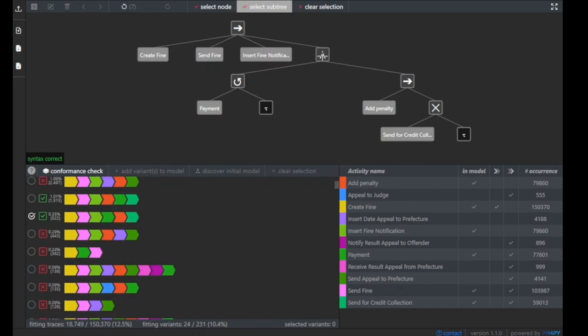Now again, the user could manually edit the process model, could press conformance check to see what is the impact on conformance statistics when editing the model. And then he or she can continue in selecting new trace variants and add this in an incremental way to the model. This is the core idea of Cortado.